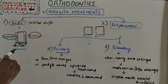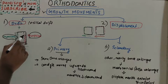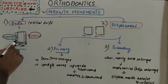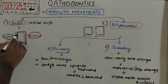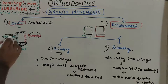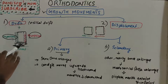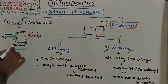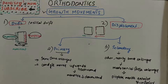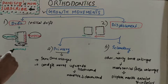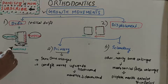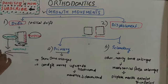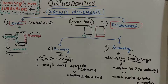Drift occurs due to the combination of deposition and resorption. The red area is resorbed and the green area is deposited. The bold black line is the initial position of the bone and the dotted black line is the final position — the bone has moved to the new position. The movement happens due to the resorption-deposition mechanism. Drift usually takes place in the direction of movement, specifically in the direction of bone deposition.